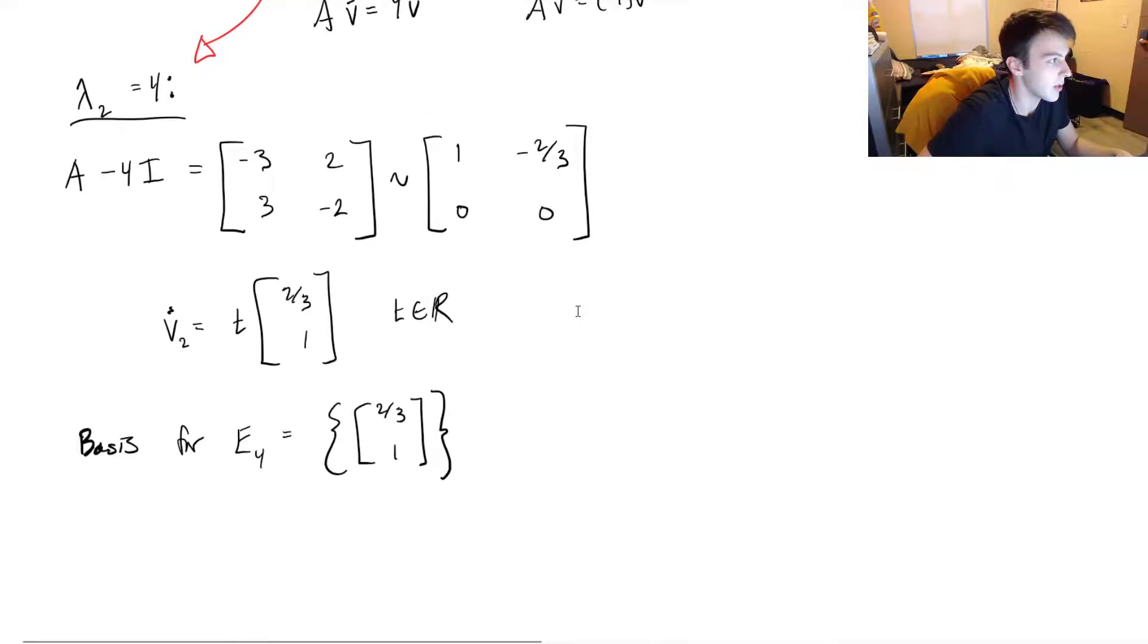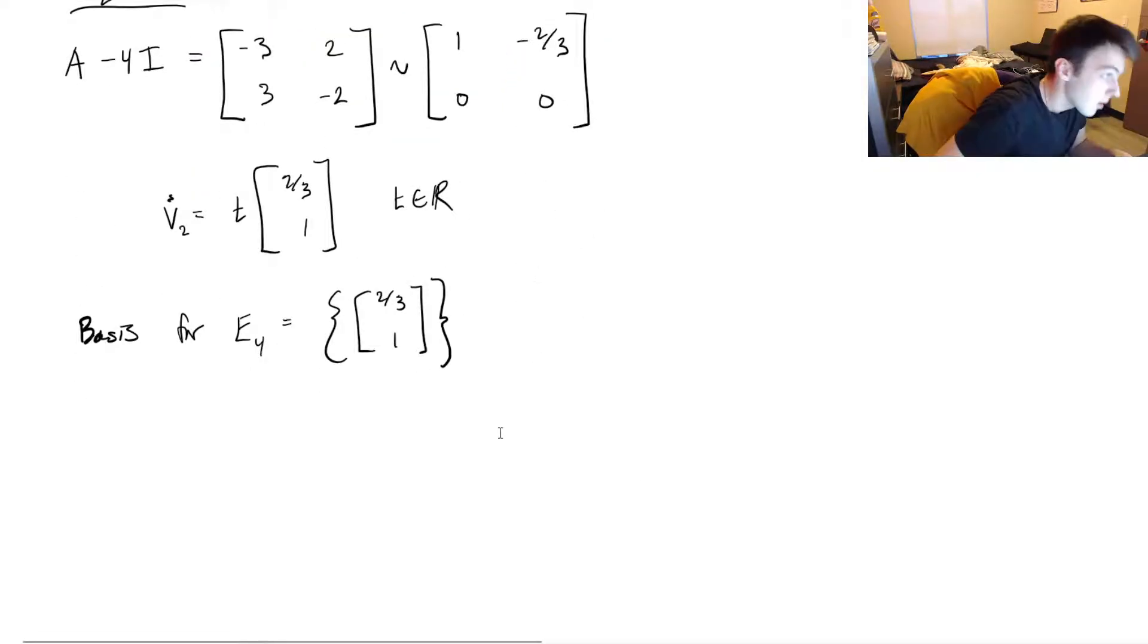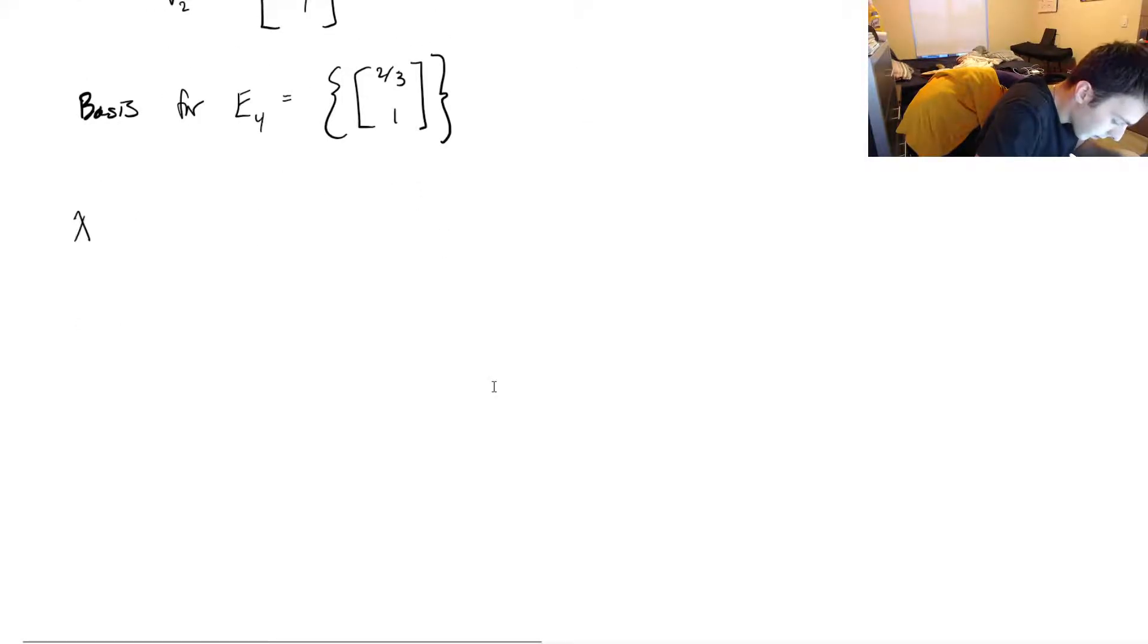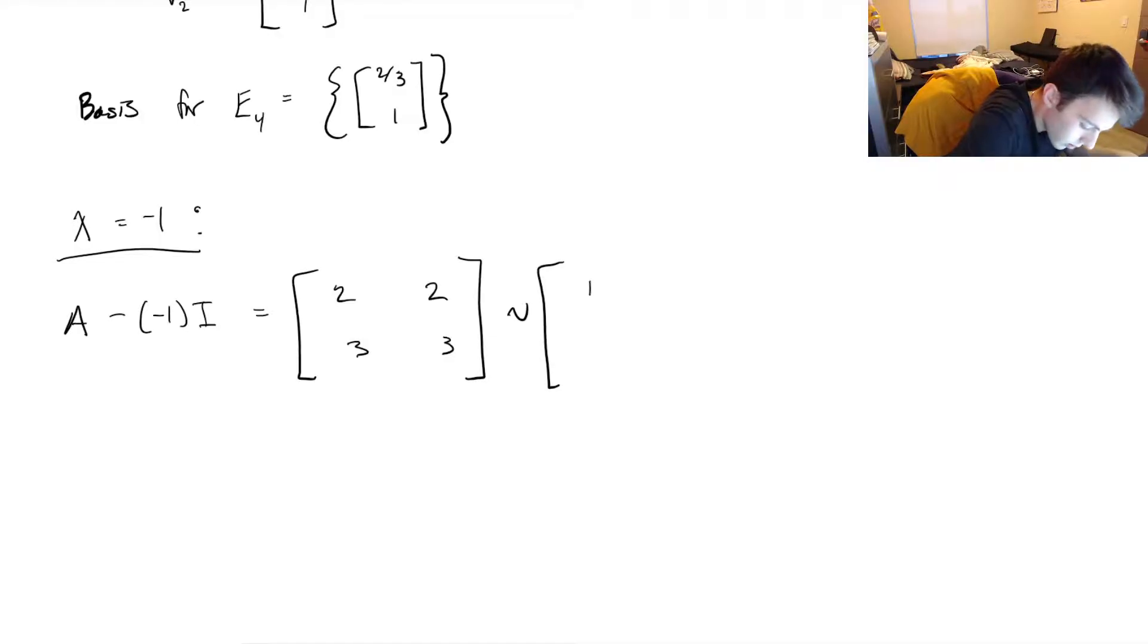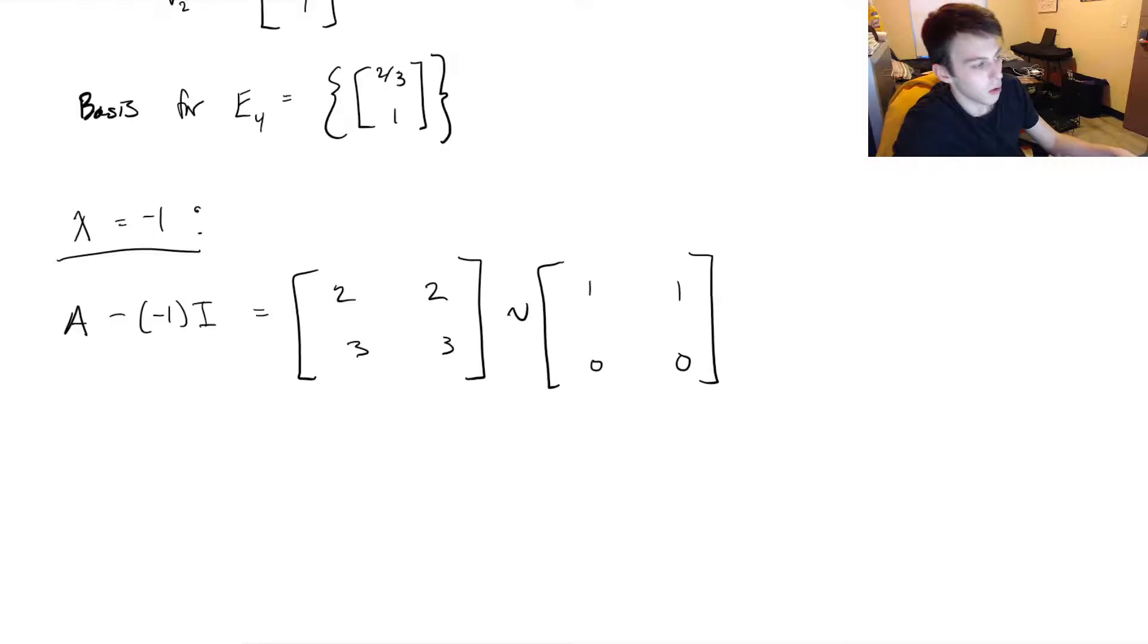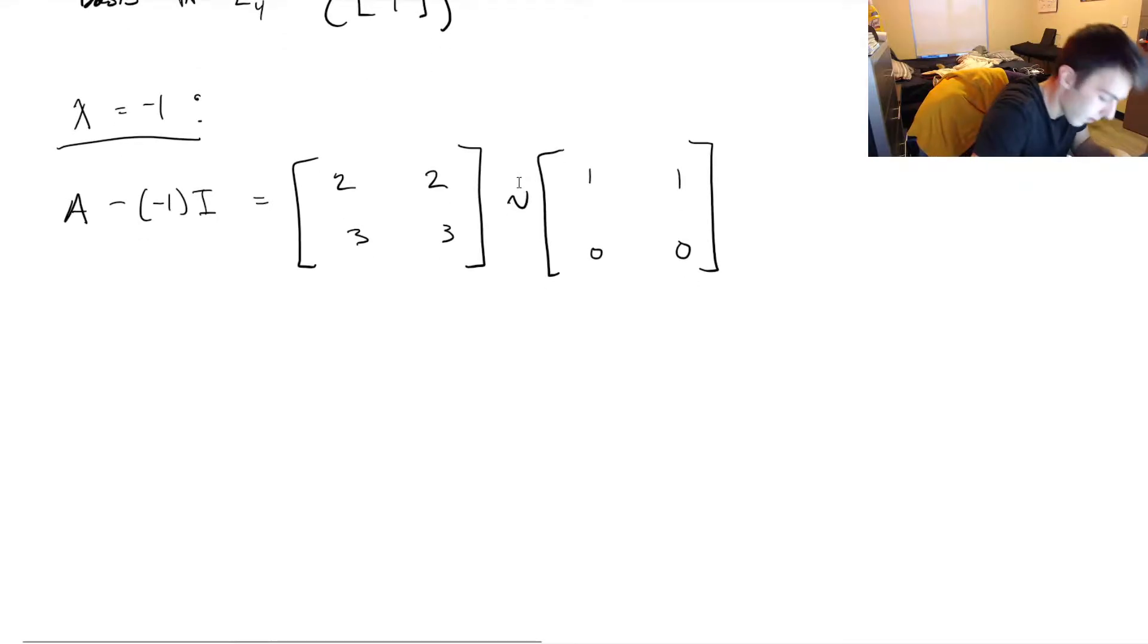So let's do the exact same thing that we did for our other value of lambda, which is -1. So I've got λ equals -1. So A minus (-1) times I, this is going to be equal to [2, 2; 3, 3]. If you were to row reduce this, you should get [1, 1; 0, 0]. You can tell this right away, since both equations are just scalar multiples, they're the same equation. So let's simplify that first row. And then reading the solutions the same exact way, let's do s times [-1, 1], where s is some real number.